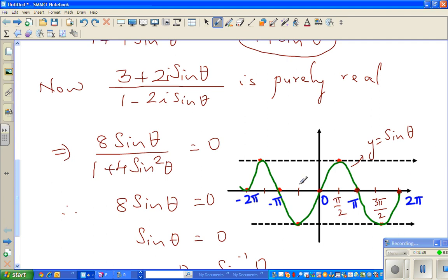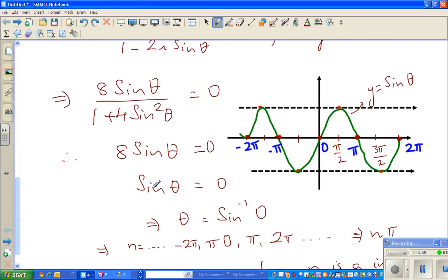It repeats itself, and if you go backwards it hits zero at -π, -2π. So if sin(θ) = 0, then θ = sin⁻¹(0).